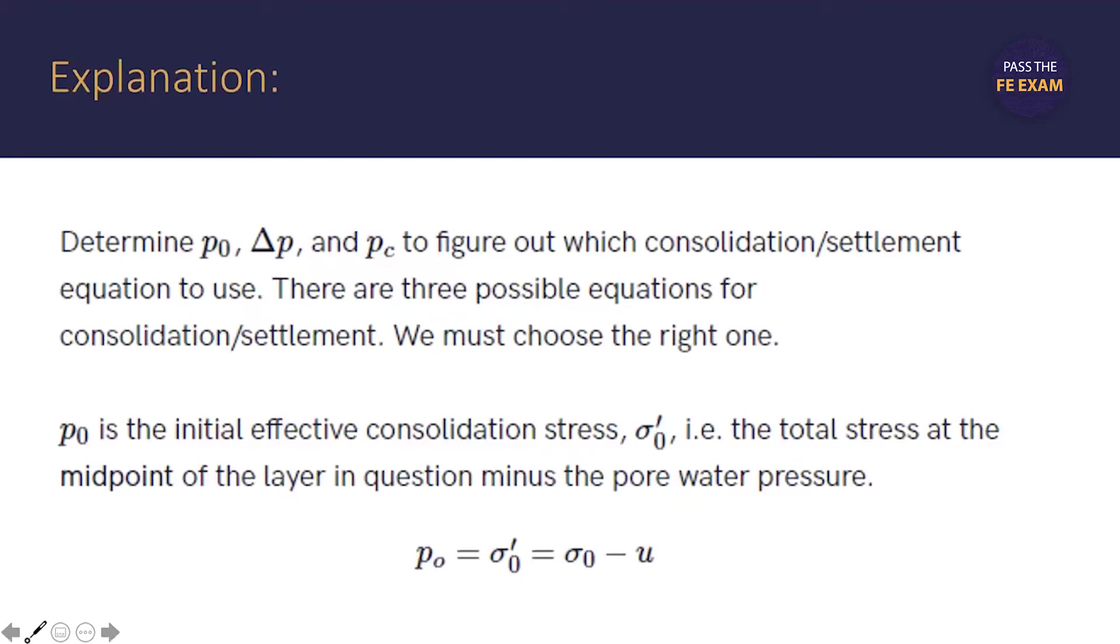So, let's start by determining p0, which is the initial effective consolidation stress, pc, which is the past maximum consolidation stress, and delta p, which is the induced change in consolidation stress at the center of the consolidating stratum.